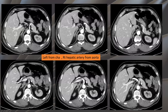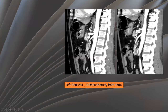Here, the left hepatic artery arises from the common hepatic artery, and the right hepatic artery arises directly from the aorta, as seen here in the axial and sagittal reconstructed images.